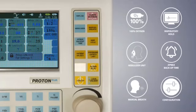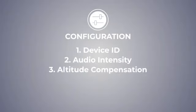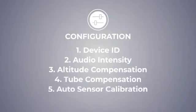Configuration: Device ID is used to give the device number. Audio intensity is to increase or decrease the volume of alarm. Altitude compensation is used to compensate the altitude. Tube compensation is used to compensate the dead space of endotracheal tube or tracheostomy tube. Auto sensor calibration is used to calibrate FiO2 sensor when required.